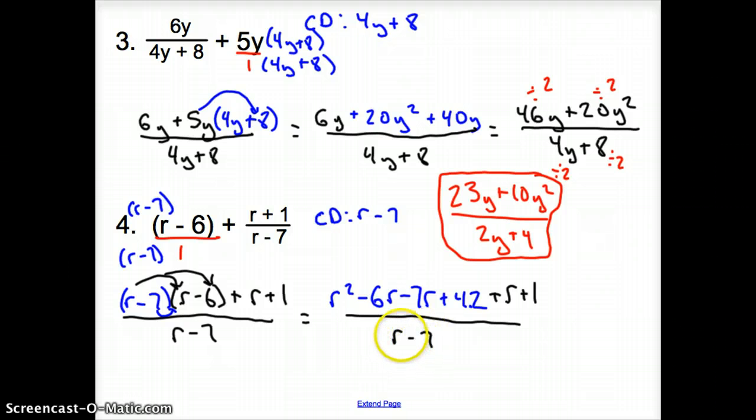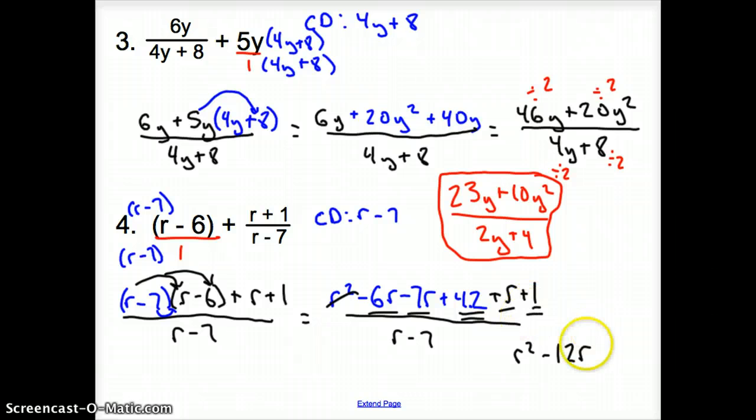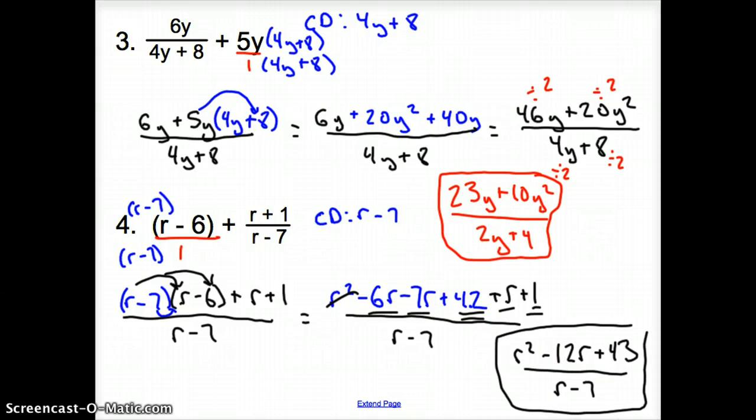So, now, let's clean up everything. Well, we have a R squared on top. R squared. So, we use this. Now, we have an R, an R, and an R here. That combines to be a minus 12R. And, then, we have some numbers here and there. So, it's plus 43. And, that all goes over R minus 7. And, so, our simplified answer is right here.